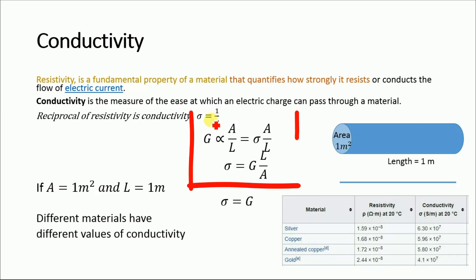From the previous equation, we know that conductance G equals sigma A divided by L. Solving this equation for sigma, we get conductivity sigma equals G times L divided by A. If the length of the wire is 1 meter and its cross-sectional area A equals 1 square meter, then sigma equals G.